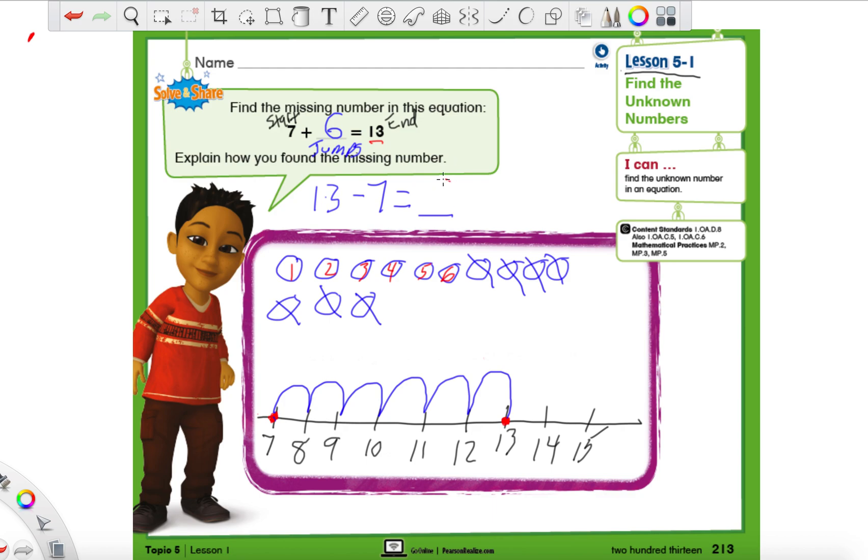And we got the same exact answer as we did up here. Right? It's the exact same answer. No matter how you choose to solve it, you will get the correct answer as long as you're careful. Never rush through these. Always take your time. So we have our number line that we can use if we want to, and we also have a quick picture we can make if we feel that is easier for you. Remember, I'm not going to say you have to do only one way. You can pick any way that works. All right? So let's go on to the next page. We're going to be on page 214 next.